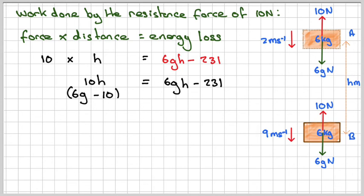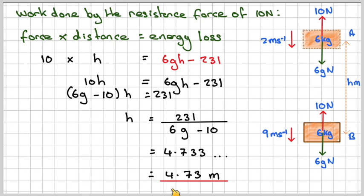So that will become 6gh minus 10h. We've taken that over there, subtracted out the h, factorised out the h, and making that now equal to 231. Therefore h will be 231 divided by 6g minus 10. We do that on our calculator, and we get 4.733. Three significant figures, that will give me a distance of 4.73 metres.